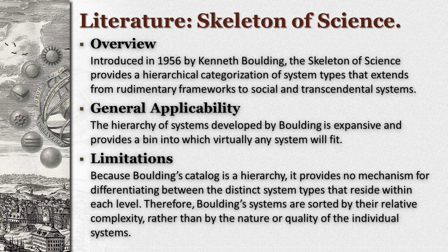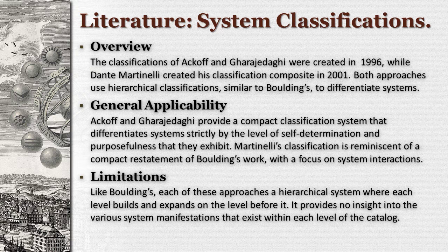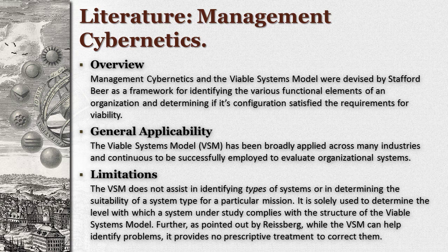This means that most systems will only fit into one category and once there, they can't easily be moved. Further, because Boulding's catalog is a hierarchy, it provides no way to distinguish between different types of systems in the same level. Other system classifications come from the work of Ackoff, Gerajadagi, and Dante Martinelli. The Ackoff catalog is a set of four classes that separate systems based on the level of self-determination or purposefulness that they exhibit. Martinelli's classifications are more reminiscent of Boulding's and focus on the nature of interactions that occur inside the system. Because they are strict hierarchies, these approaches have the same limitations that exist in Boulding's Skeleton of Science.